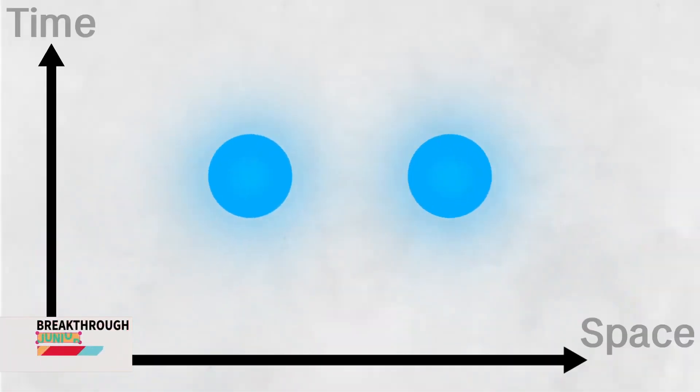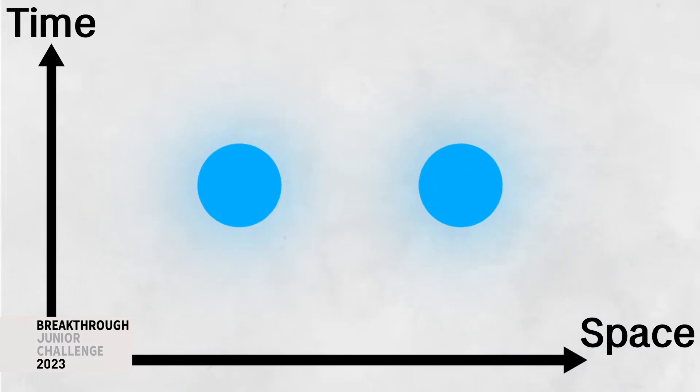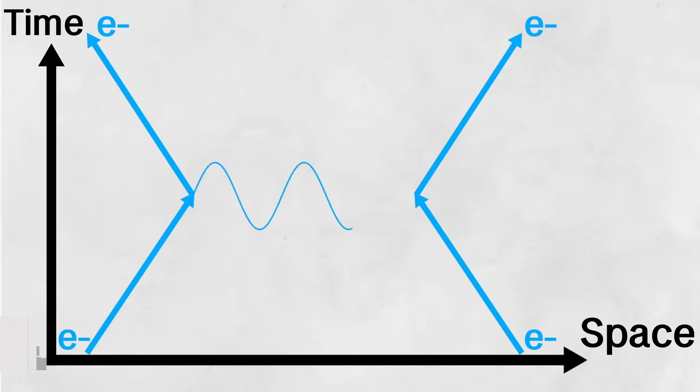Consider two electrons moving towards each other. As time moves forward, the electrons move closer, so we can graph that on the axes of space and time like this. But eventually, the electrons will repel. The electrostatic force that does this is carried by a photon.